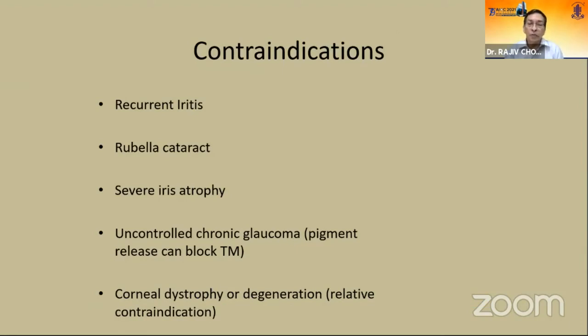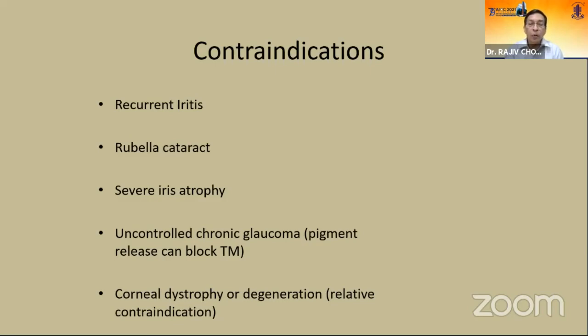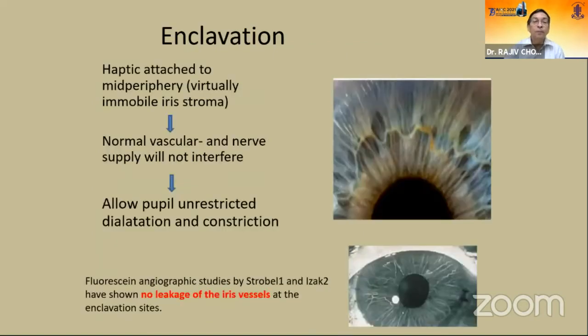Why iris claw? Easy to implant once learned. Less chances of secondary glaucoma. Lower rate of dislocation. Less endothelial cell loss — comparable to scleral fixated IOL and better than anterior chamber IOL. It is a good option in eyes with inadequate posterior capsular support. Contraindications include recurrent uveitis, rubella cataract, severe iris atrophy with no iris support, uncontrolled chronic glaucoma, corneal dystrophy or degeneration.